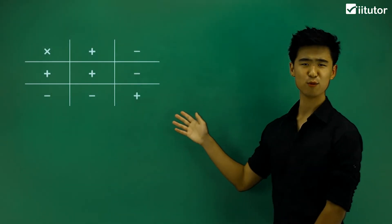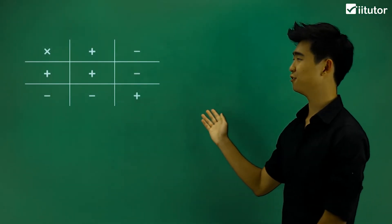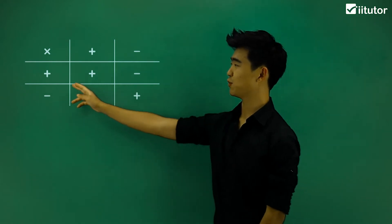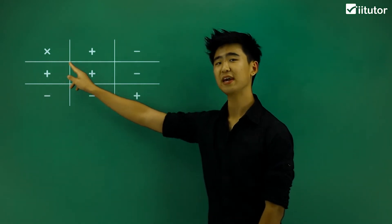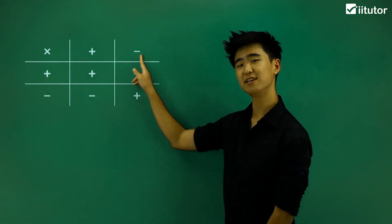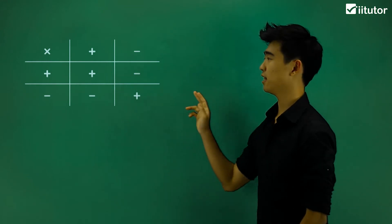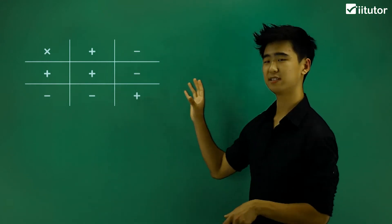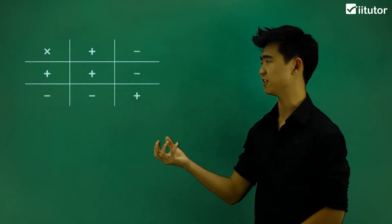Let's take a look at this table that we have here. If we look at it, we have two signs here multiplied by the two signs here. How do we look at this more specifically?